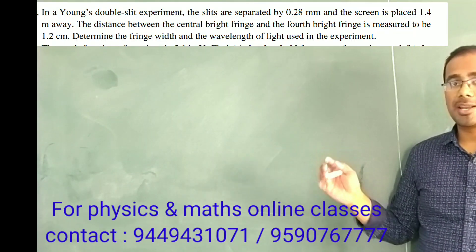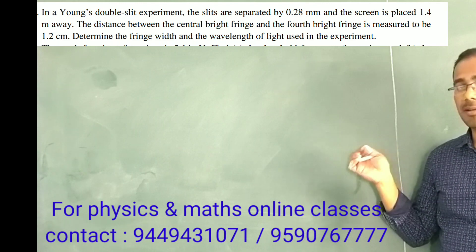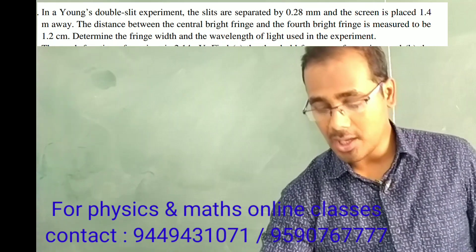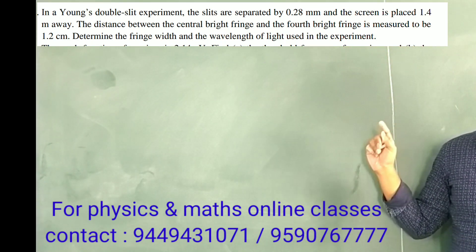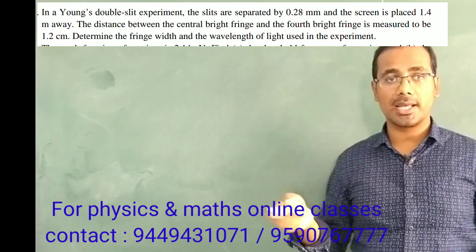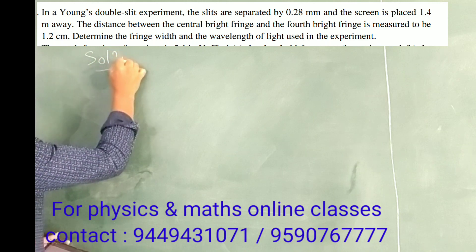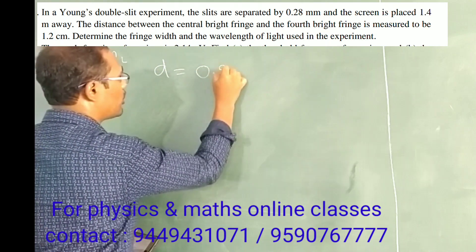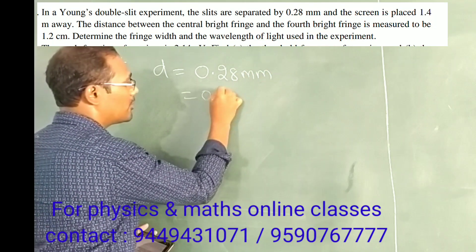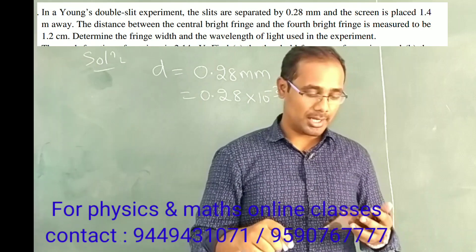In this video, this is a very important question for wave optics — the Young's double slit experiment. The slits are separated by 0.28 mm, which is 0.28 × 10⁻³ meter. That is your small d.